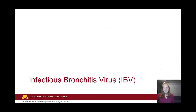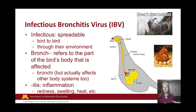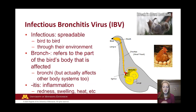Now let's move on to Infectious Bronchitis Virus, often abbreviated as IBV — you'll also sometimes see it abbreviated as IB. Again, let's break down the words. Infectious, we already learned, means spreadable and contagious from bird to bird. Bronch refers to the part of the bird's body affected — the bronchi, between the trachea and the lungs. It's not the most perfect name because while the bronchi are affected, many other body systems are infected by this virus as well. And itis means inflammation — redness, swelling, heat, pain.